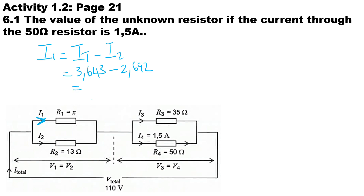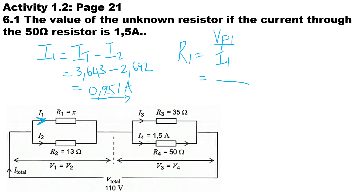Using the calculator, i1 works out to 0.951 amps. Finally, to determine the value of R1, we divide the volt drop across the first branch by the current in the first branch: 35 volts divided by 0.951 amps gives R1 = 36.803 ohms.